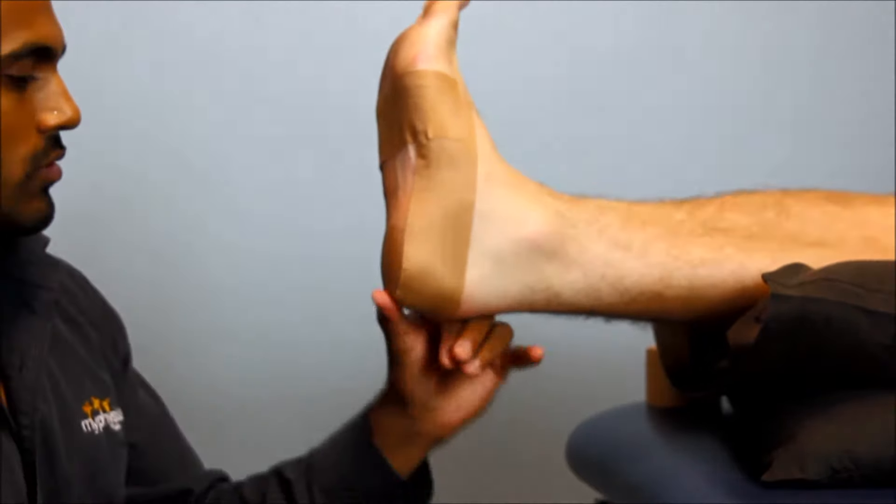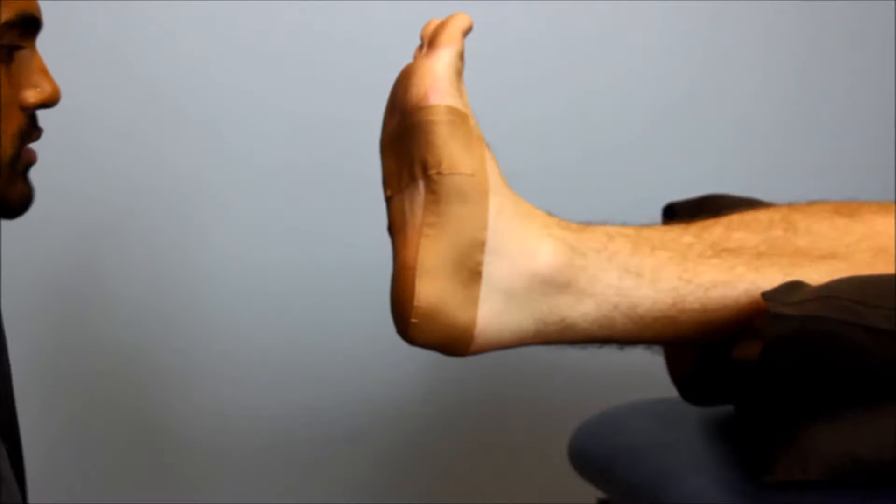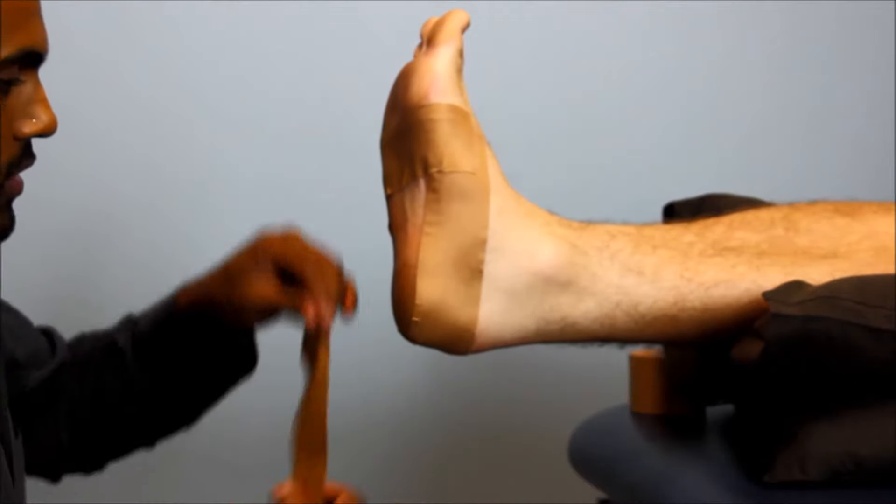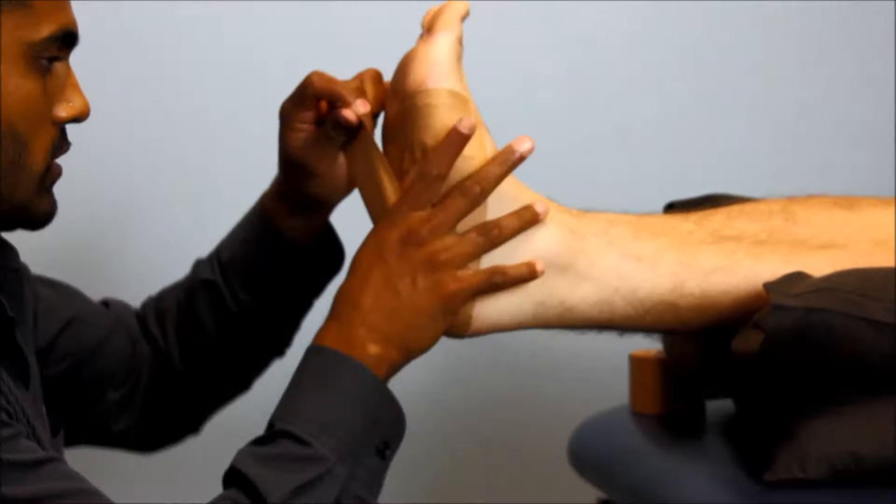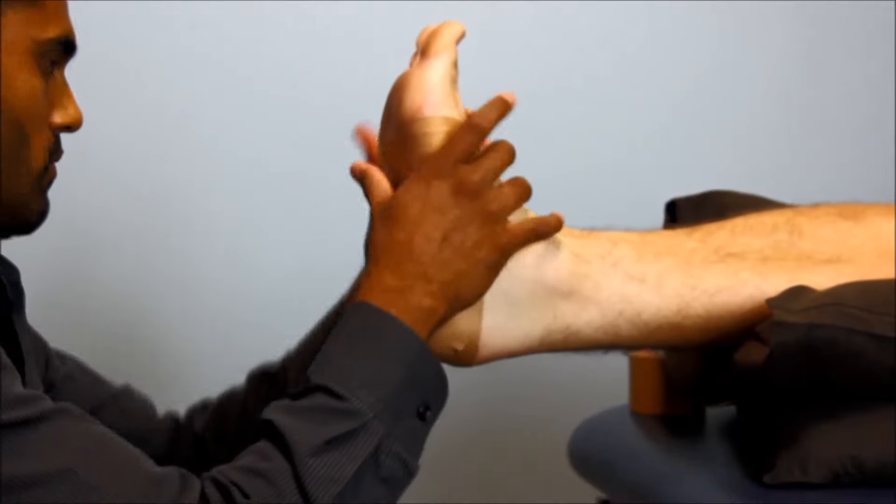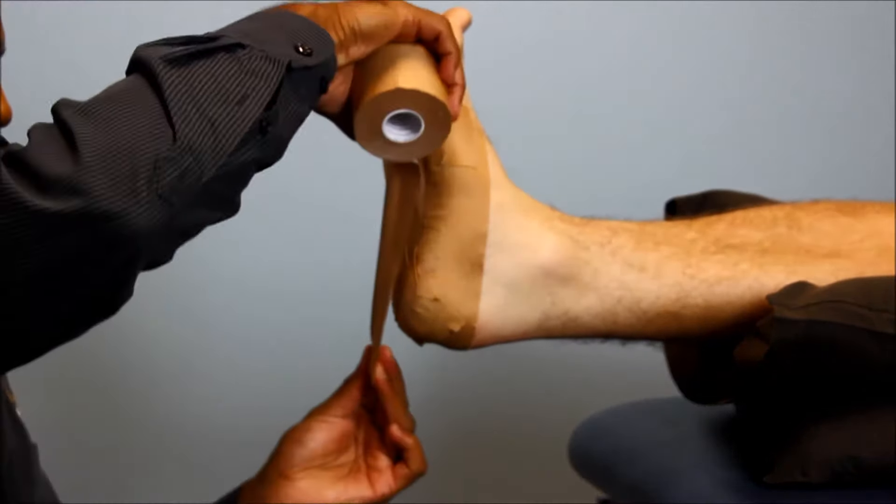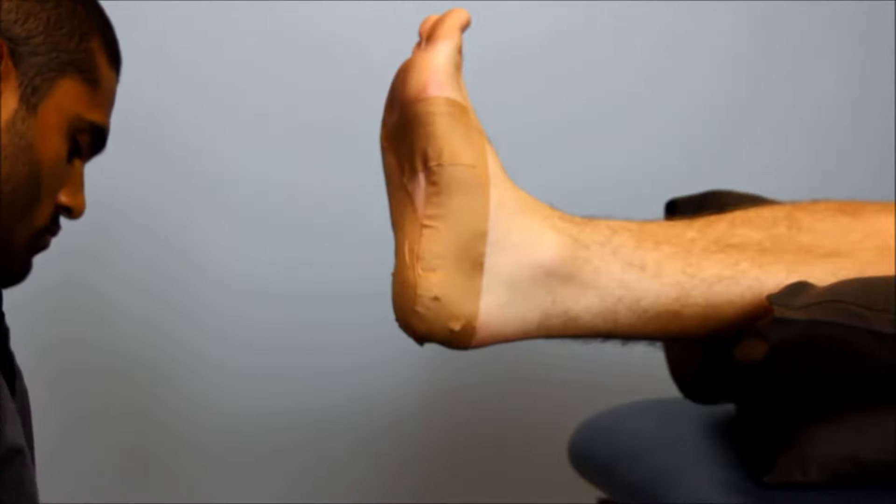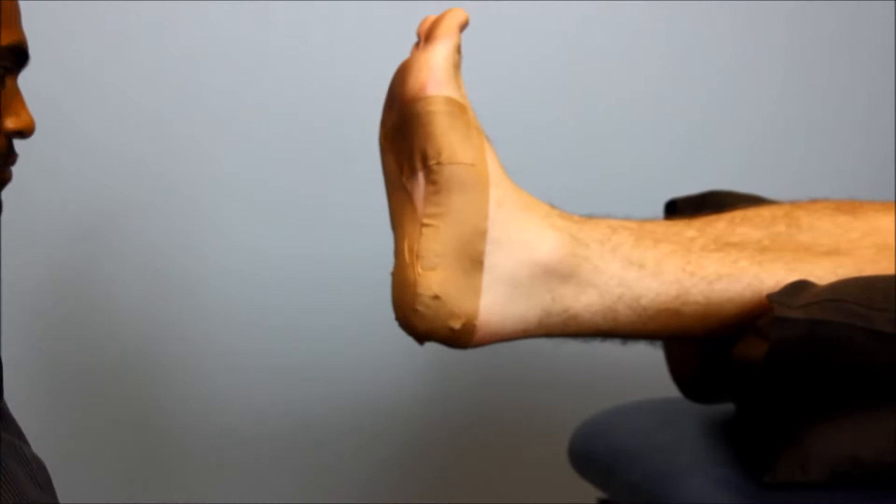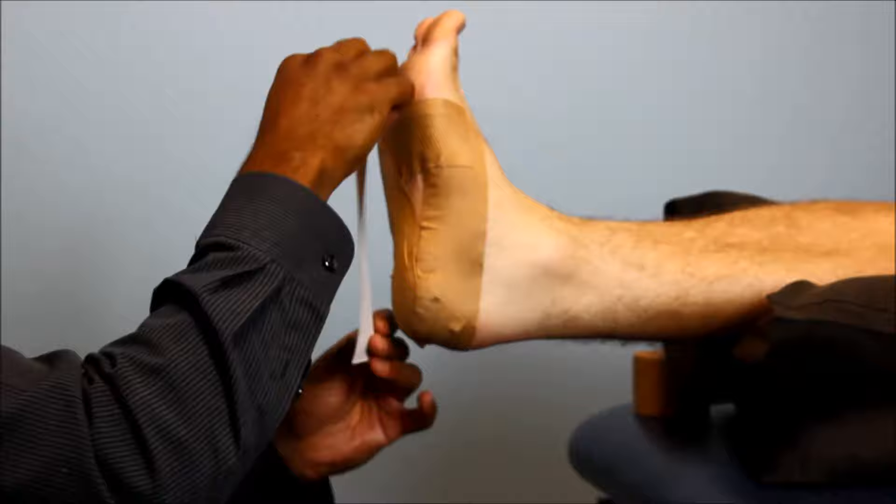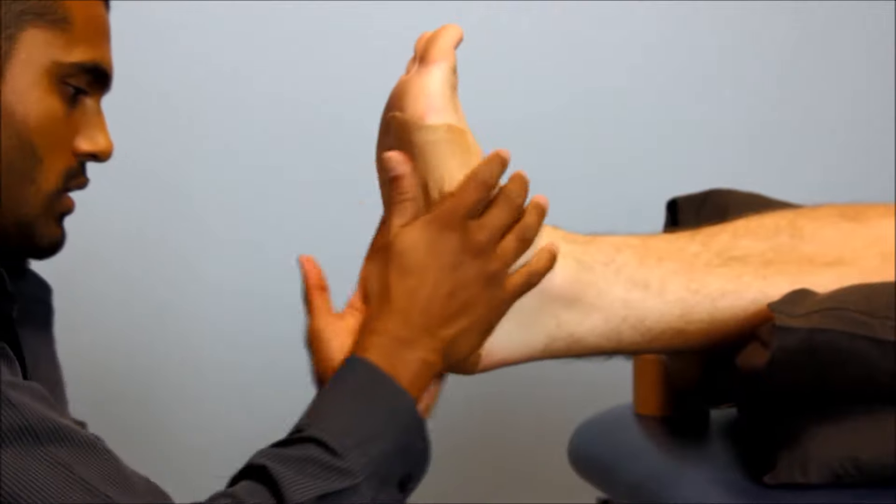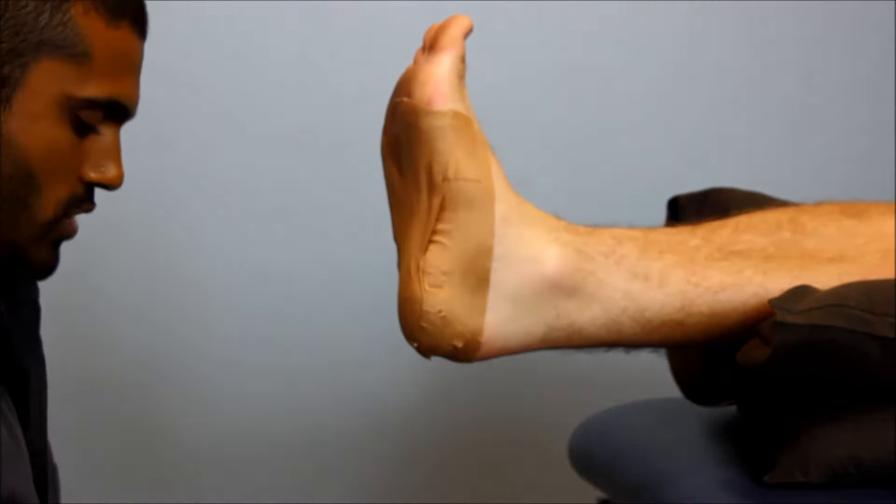And then changing to 38mm moccasin tape, three strips to the bottom of the foot. So starting at the heel, one side of the heel crossing across the foot to the other side, putting a little bit of tension as you're coming up. And then the third one is just straight up the middle.